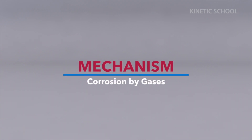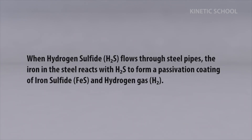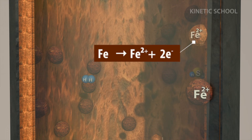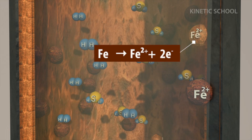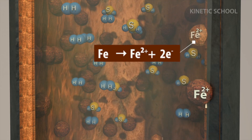Mechanism of corrosion by gases. The mechanism involves the coating of iron sulfide and hydrogen gas on the metal surface.